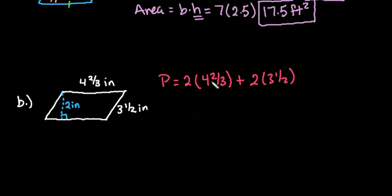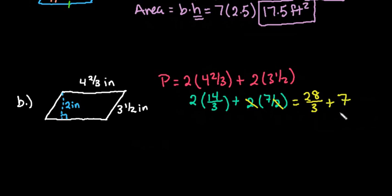We would do 4 times 3 which is 12 plus 2 which gives us 14. So we would do 2 times 14 thirds plus 2 times, 3 times 2 is 6 plus 1, which gives us 7 halves. For this I would go ahead and simplify this one. 2 divided by 2 does cancel out so we're just left with 7 here. We would be left with 28 thirds plus 7.